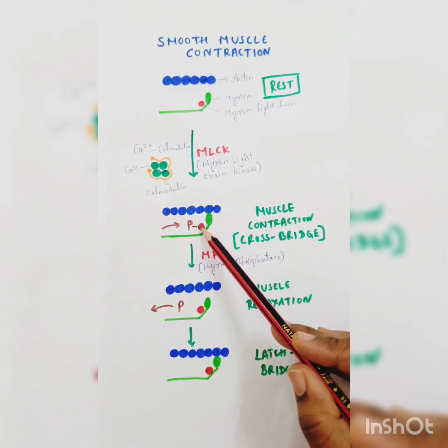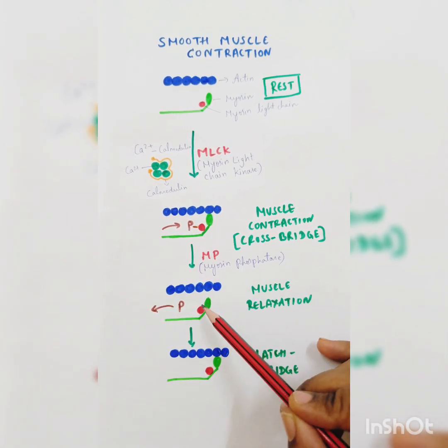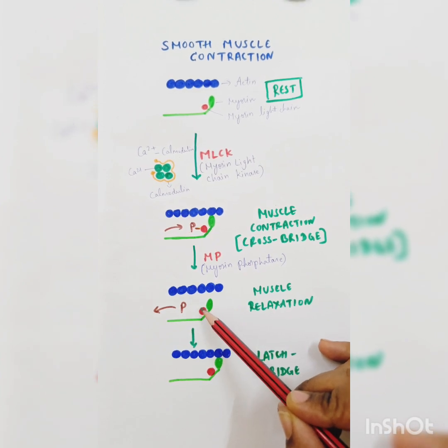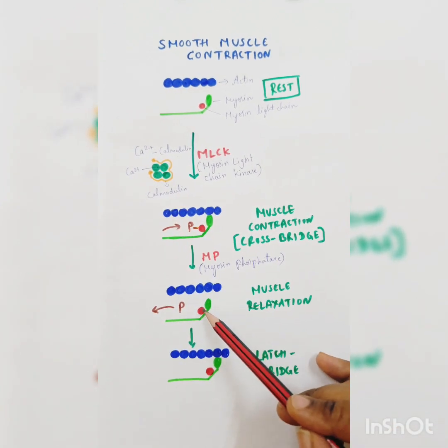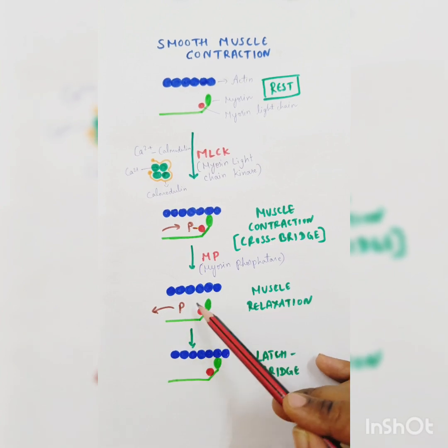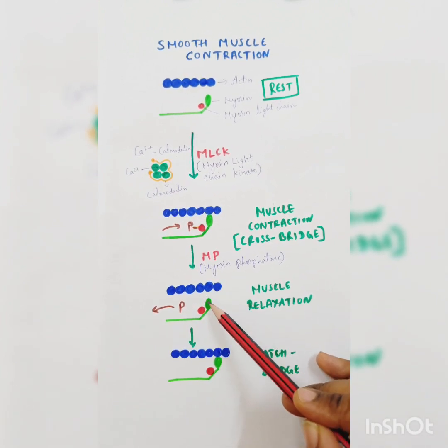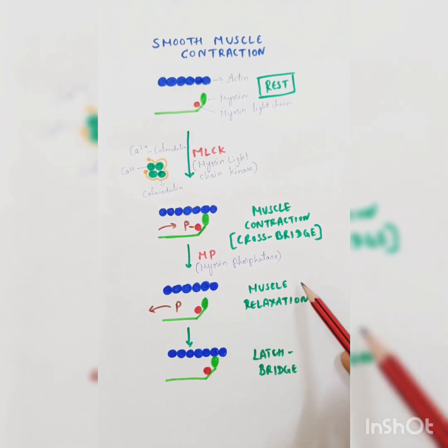Kinase enzyme helps in phosphorylation, while phosphatase enzyme causes dephosphorylation, which is removal of the phosphate group. Once the myosin light chain is dephosphorylated, the myosin head gets separated from the actin molecule and the muscle goes for relaxation.